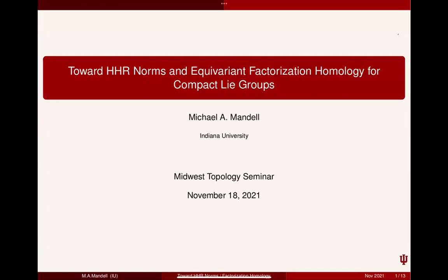Toward HHR norms and equivariant factorization homology for compact Lie groups. Nominally this is a topic in equivariant stable homotopy theory, but I'm not going to assume any kind of familiarity with equivariant stable homotopy theory and will keep all of that to a minimum.